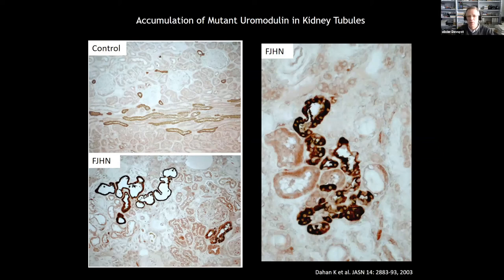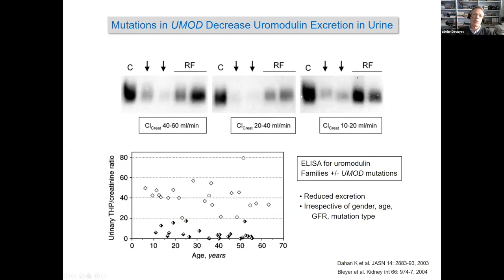When you look at immunostaining for uromodulin in biopsies of patients with the disease, you can see a gross accumulation of the protein in the tubules instead of being secreted into the urine, with fibrosis matrix outside the damaged tubules. As predicted by this accumulation, there is much less uromodulin in the urine in patients bearing these mutations. Western blots and ELISA studies from Tony Bleyer's group showed that everyone with a mutation has very low urinary uromodulin — a hallmark of the disease.